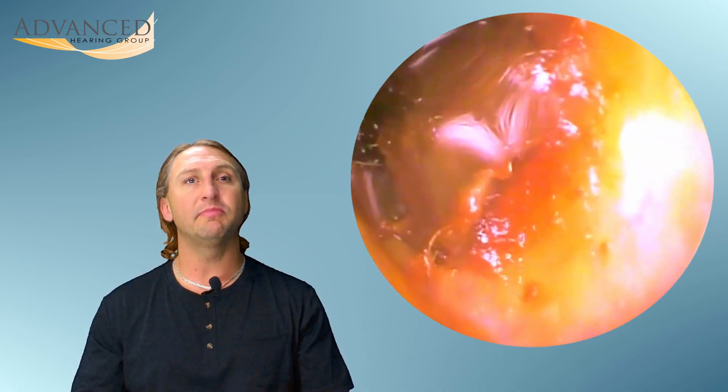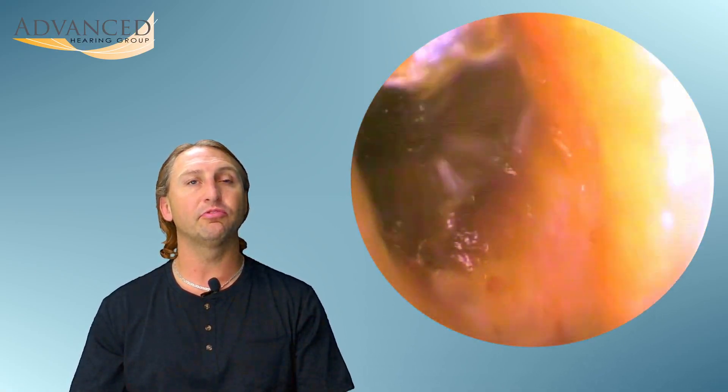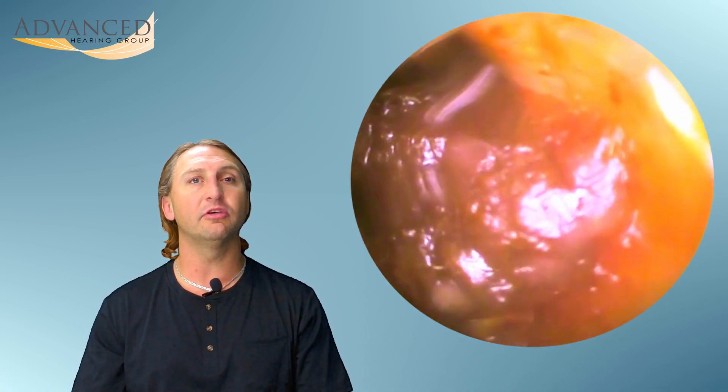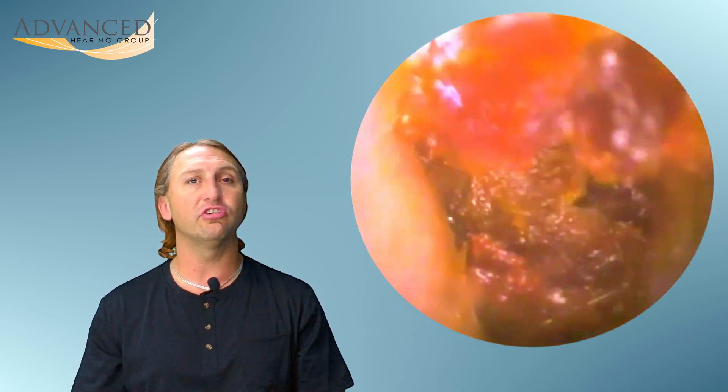Your ceruminous and sebaceous glands are the two glands that actually produce the wax. It's an oily substance from the body that helps to protect the ear from foreign bodies such as dirt, debris, bugs, and anything else that might work its way down the ear canal. It also helps to moisten the skin in the ear canal as well.